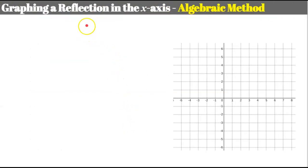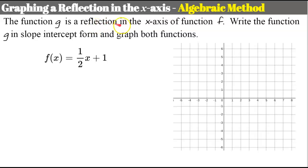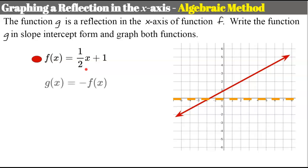Let's graph a reflection in the x-axis using the algebraic method. Here, function g is a reflection in the x-axis of function f. We need to write function g in slope-intercept form and graph both. Given function f with y-intercept of 1 and slope of 1/2, I graph it: y-intercept 1, rise 1, run 2. Now, reflecting in the x-axis means changing all the outputs. Reflect over the x, change the outputs; reflect over the y, change the inputs.